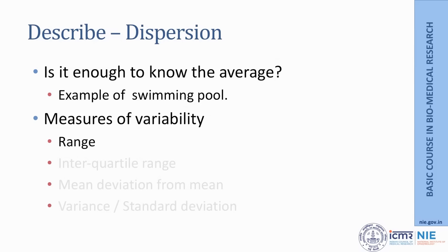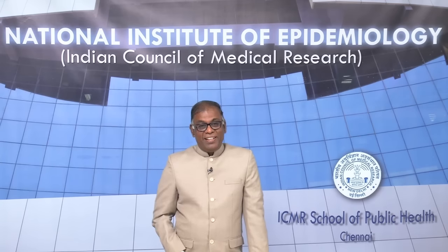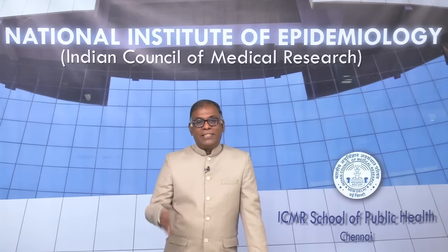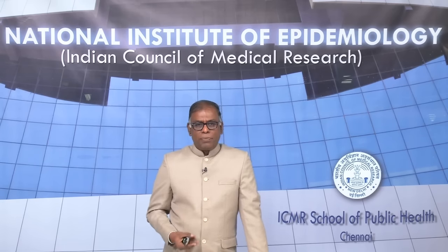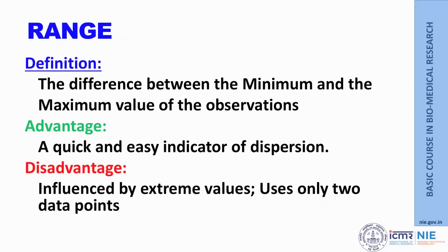Mean, median, and mode are three good measures for summarizing data to get an average value. But knowing the average alone is not enough. For example, if you are at a swimming pool and the manager says the average depth is four and a half feet, you feel comfortable — but if the spot where you jump is nine feet deep, you are in trouble. What you needed to ask was about the variability: the pool may be as shallow as three feet in some places and as deep as nine or ten feet in others.